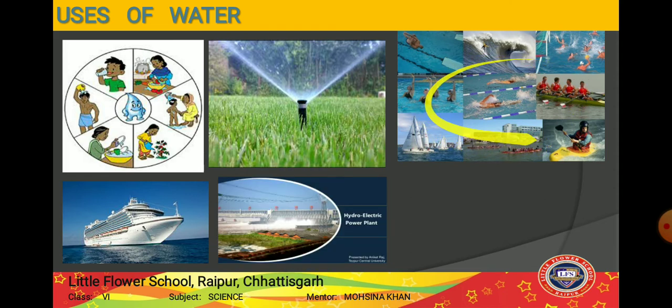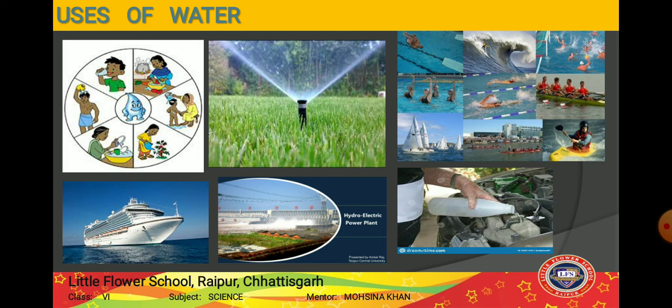Water is also used for generating electricity in hydroelectric power plants. 'Hydro' means water, so in hydroelectric power plants we generate electricity with the help of water. We also use water in the radiators of vehicles — cars, buses, and trucks — as a coolant to keep their engines cool. These are the various uses of water which we see in our daily lives.